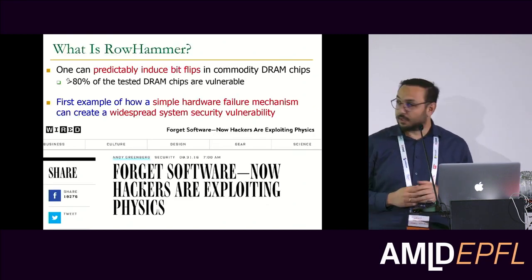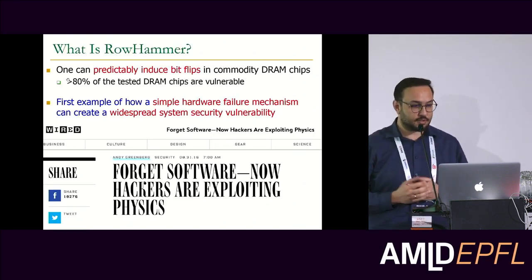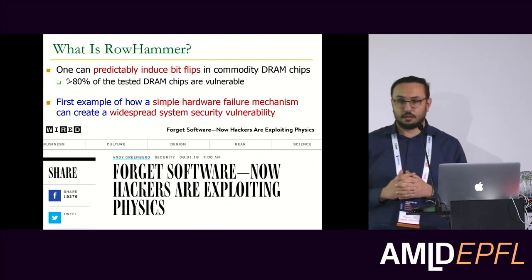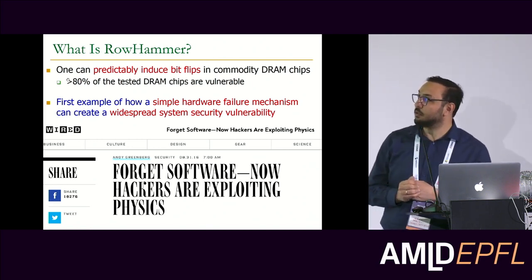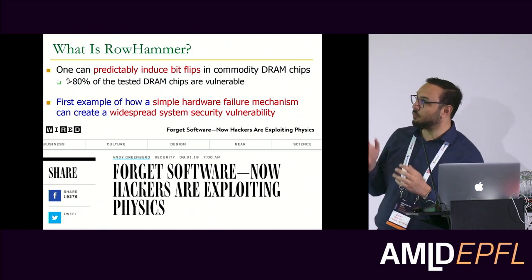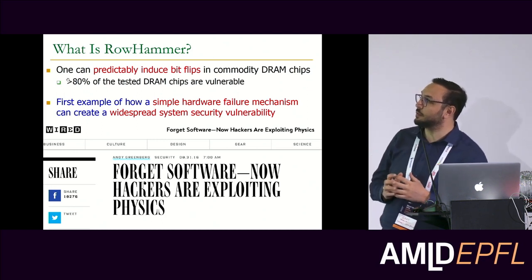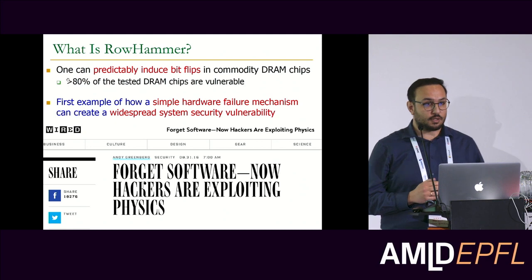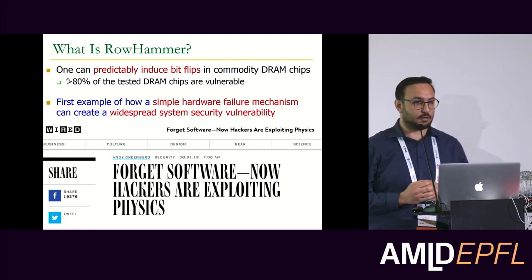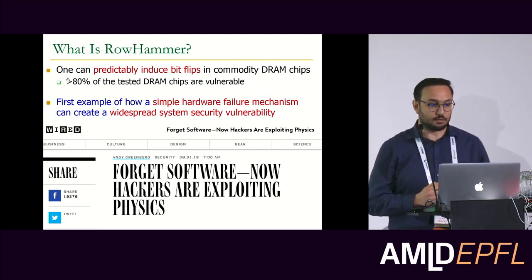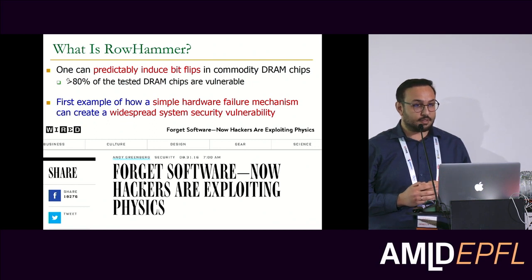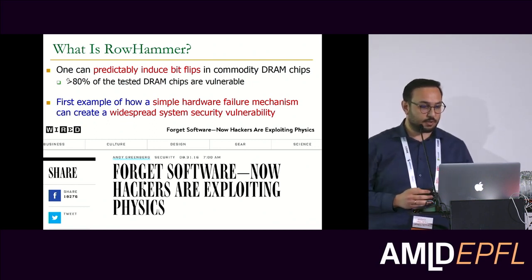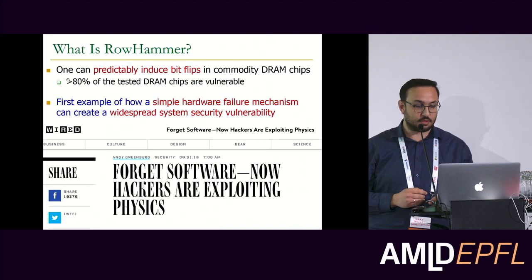Today I'll talk about our proposal on understanding Rowhammer and its solutions. The thing about Rowhammer is that one can predictably induce bit flips in commodity DRAM chips. When we look at real DRAM chips on the market, 80% of them are tested to be vulnerable. This is actually the first example of how a simple hardware failure mechanism can create a widespread system security vulnerability.